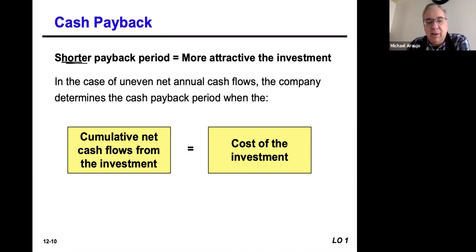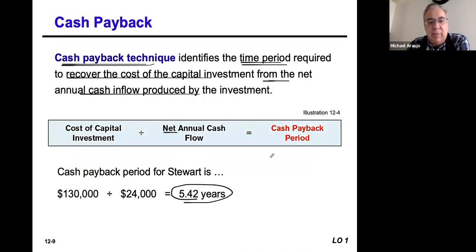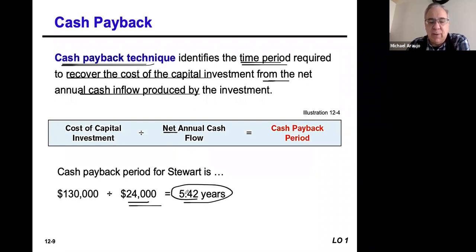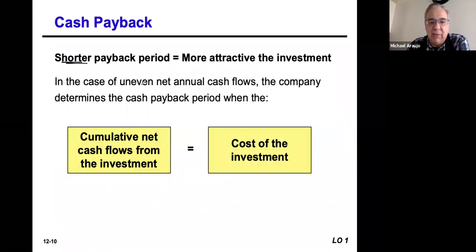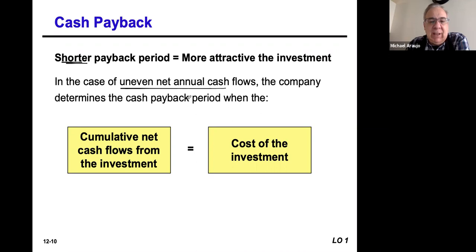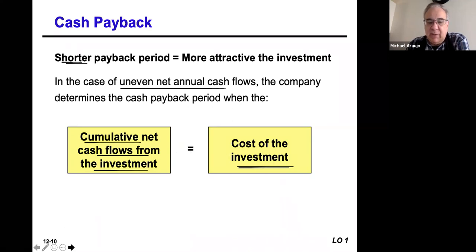That particular example assumes $24,000 is a steady cash flow every single year for the whole 10 years. But most investments don't work that way — in many cases the cash flow is going to be uneven. There will be some years where the cash flow is lighter than others. So the company has to use a different method to determine whether they should actually fund it. They look at the cumulative net cash flow — the total amount cumulative — and compare it with the cost of the investment. It has to at least equal, if not be greater than, the cost of the investment for things to work out.